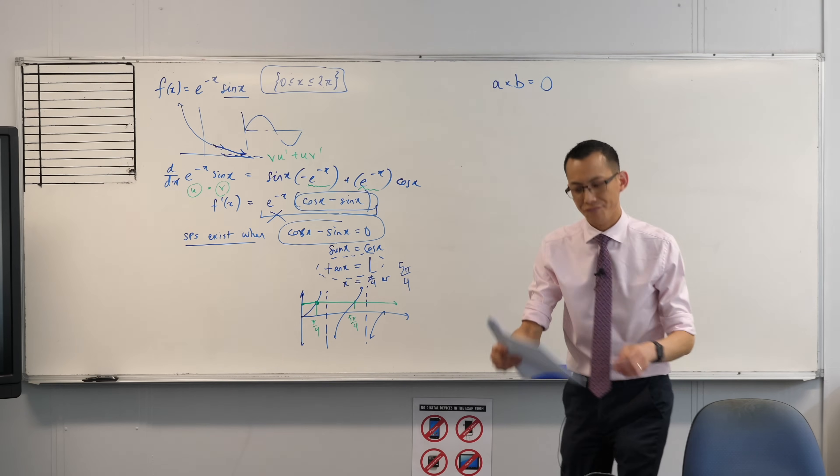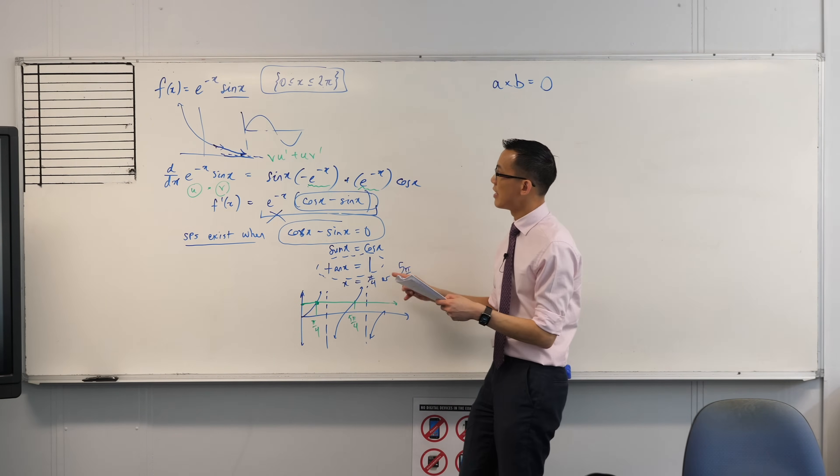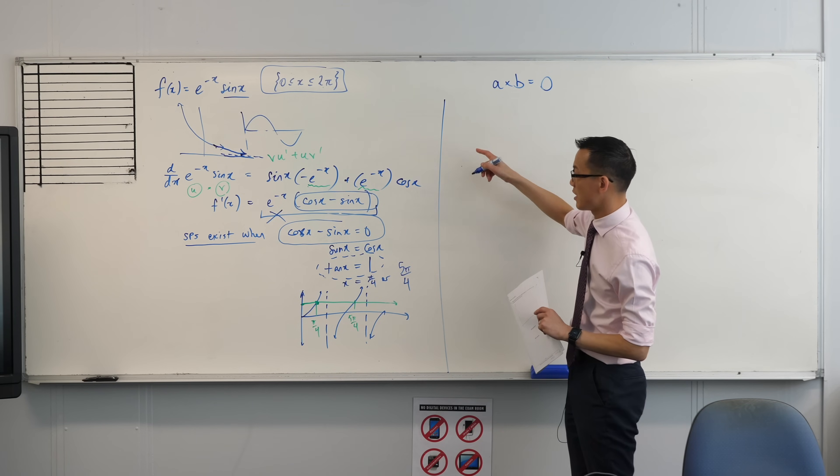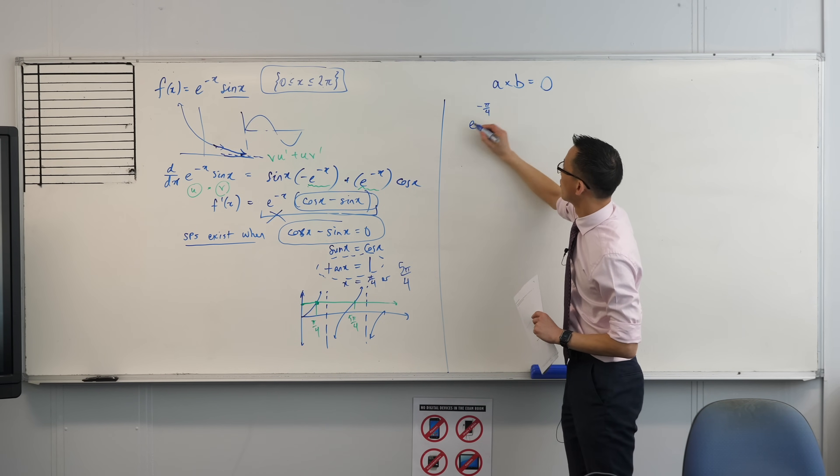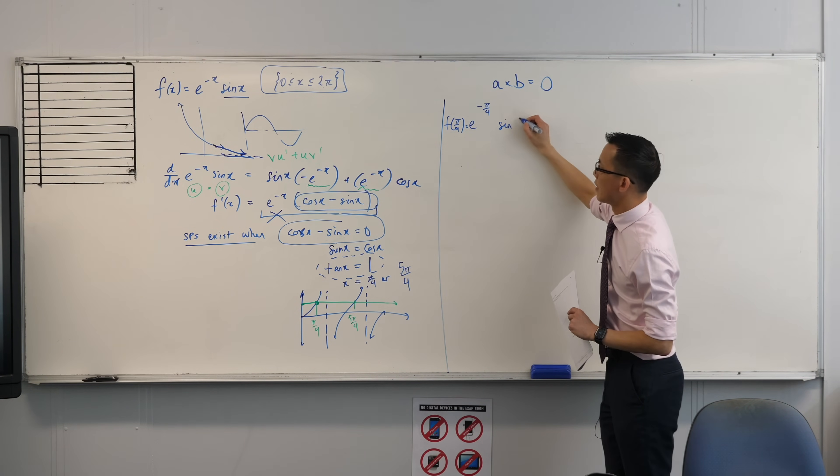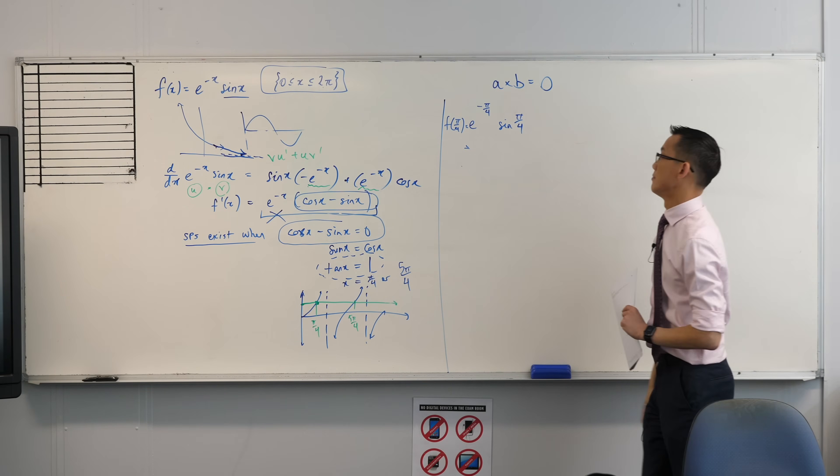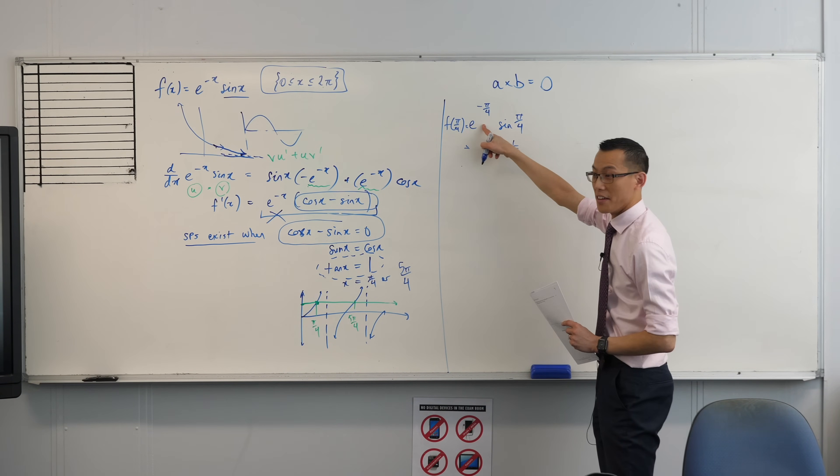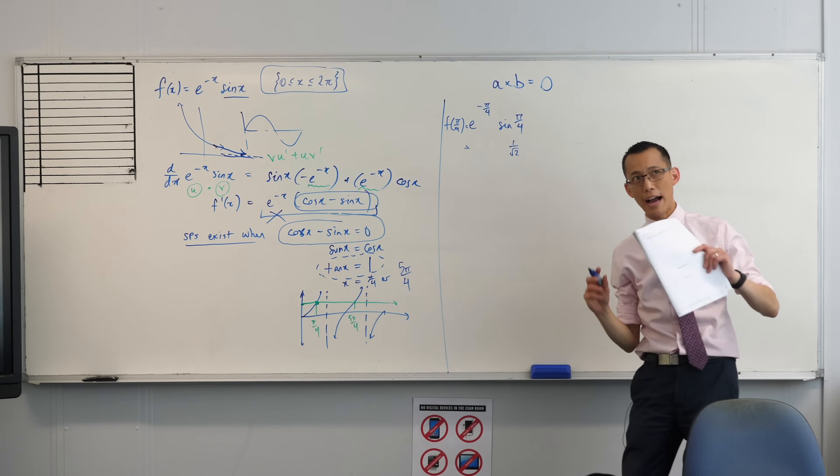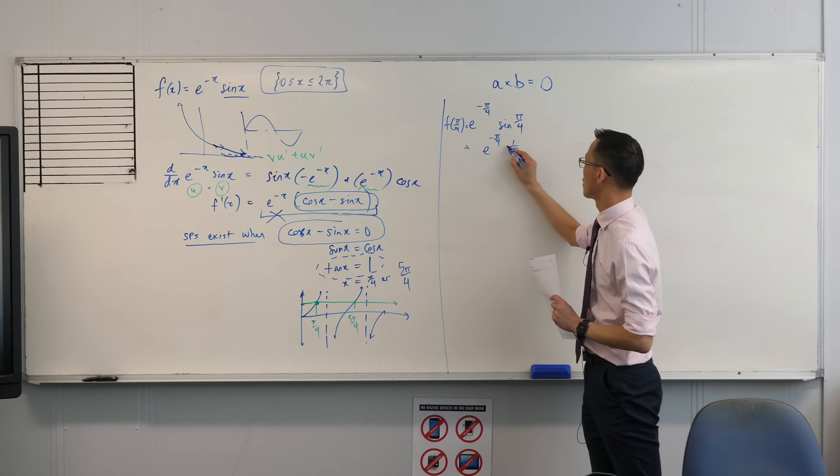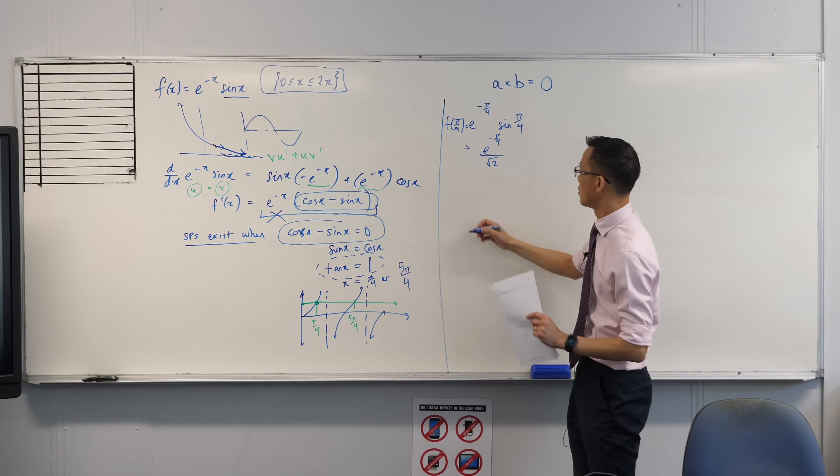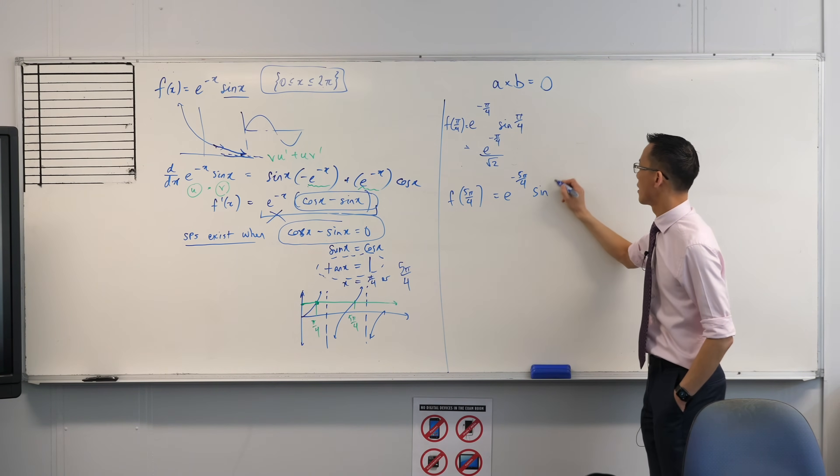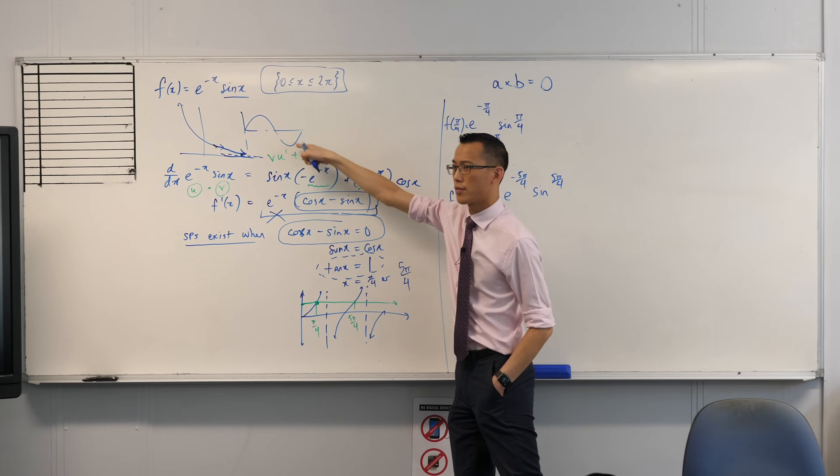The original question did say find coordinates. I've got an x value. So what I need to do is put them back into this original function and get a y value. I didn't bring a calculator with me. So I'm going to go e to the power of negative pi on four times sine of pi on four. These are gross numbers. I really do need a calculator for this one. That's one on root two, but this I have no idea what that is. I would just leave it in exact form. I can leave this in exact form for this answer for now. So it's that divided by root two.